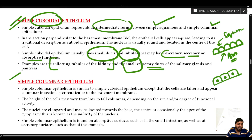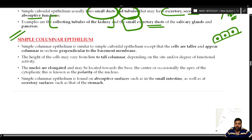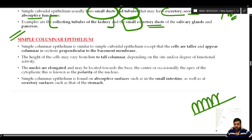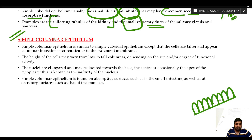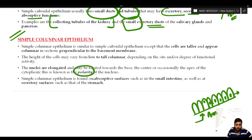Next is simple columnar epithelium. Just like cuboidal epithelium, these cells rest on a single basement membrane, but the cells are elongated and taller in size. All cells touch the basement membrane, making it a simple epithelium, and because they are longer than cuboidal cells, they are simple columnar. The nucleus is elongated and can be situated at the base, mid-zonal, or apical position — this is what we call the polarity of the nucleus.